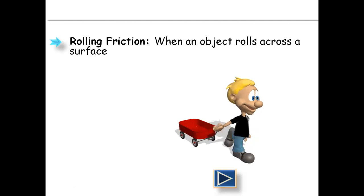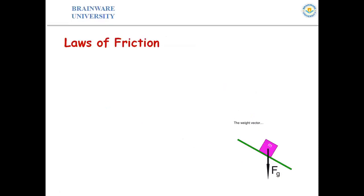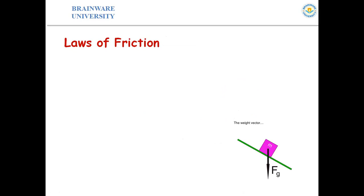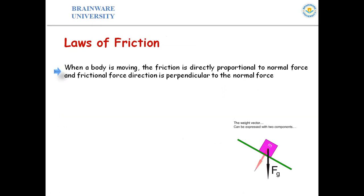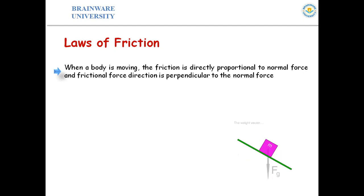Now, the laws of friction. What are the laws of friction? There are many laws of friction. First, when a body is moving, the friction force is directly proportional to the normal force. The friction force always acts in the direction opposite to the direction in which the body tends to move. So friction is directly proportional to the normal force, and the friction force acts perpendicular to the normal force.